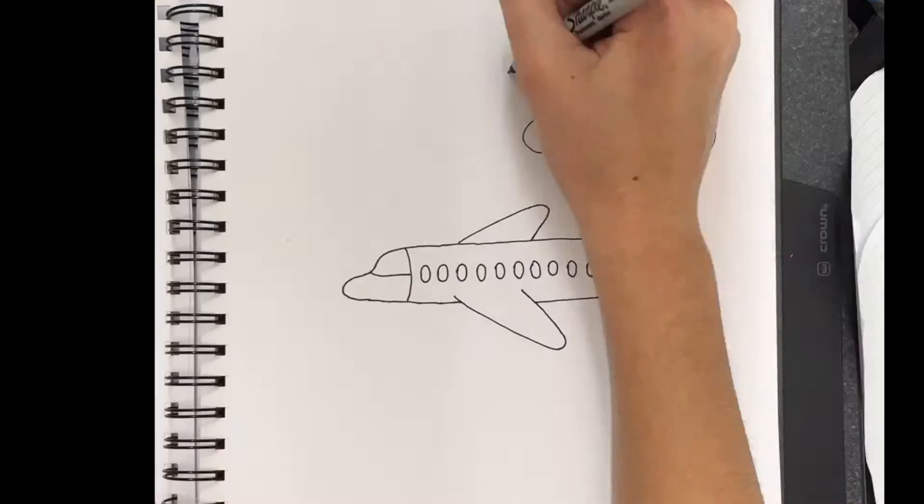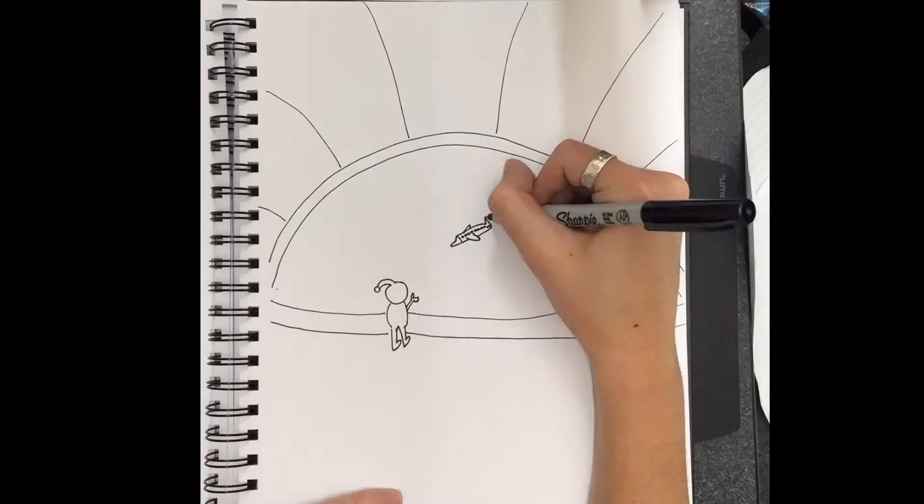As the three friends began their journey, they noticed something strange, a flying object headed for disaster.